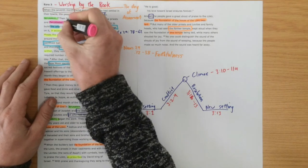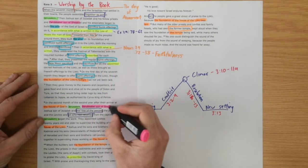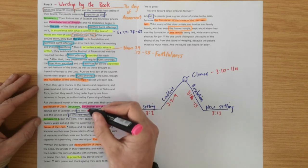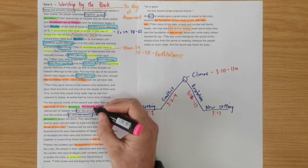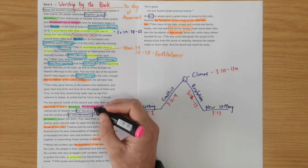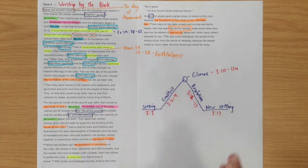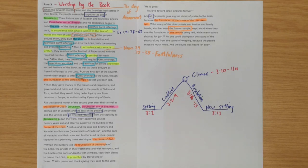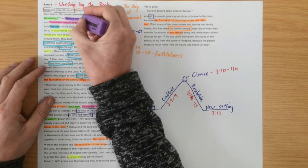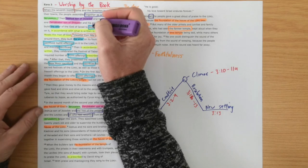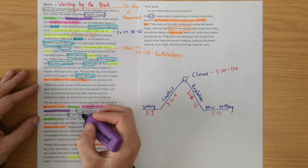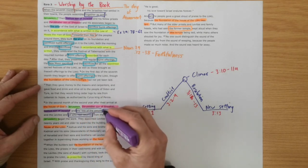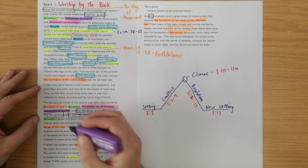And again we see Zerubbabel the son of Shealtiel is a key player in the story. And remember from chapter 2, Zerubbabel is a direct descendant of king David. So the promise made to David stands. This is a foreshadowing of our Lord Jesus who also came from the line of David. Zerubbabel is mentioned in his genealogy. And so they've got good leaders in Zerubbabel, they've got good spiritual leaders in Joshua son of Jehozadak.